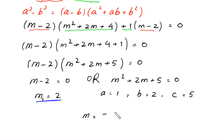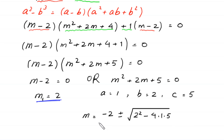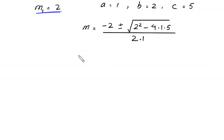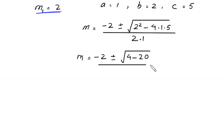According to the quadratic formula, m is equal to negative b — that is negative 2 — plus or minus square root of (b squared minus 4ac) divided by 2a. So: negative 2 plus or minus square root of (2 squared minus 4 times 1 times 5) divided by 2 times 1. That gives negative 2 plus or minus square root of (4 minus 20) divided by 2.